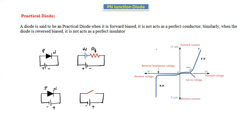If you see the characteristics in the practical diode, it does not start conducting from zero. It takes some voltage — at 0.7 volts, after 0.7 volts it starts conducting. A very small current flows in the reverse bias direction.